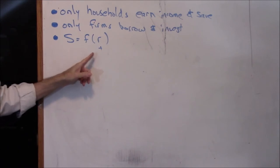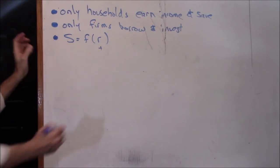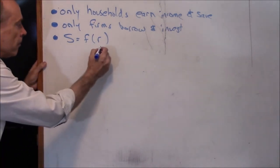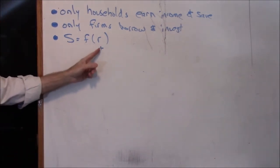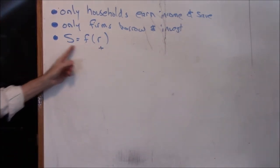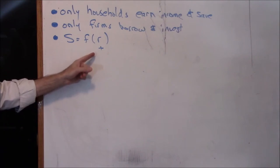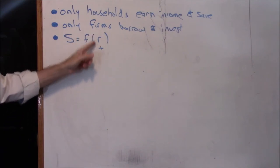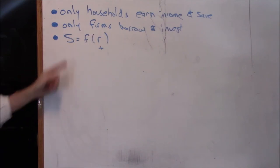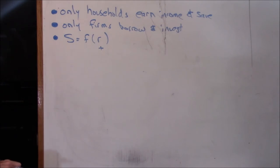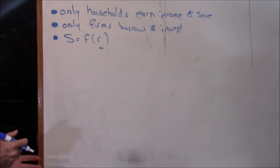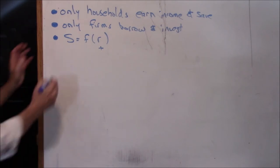Third: savings is a positive function of the interest rate. When interest rates go up, people save more; when interest rates go down, people save less. A plus sign means same direction: when R goes up, S goes up; when R goes down, S goes down. We're going to assume people are willing to save more when they're rewarded more for saving.